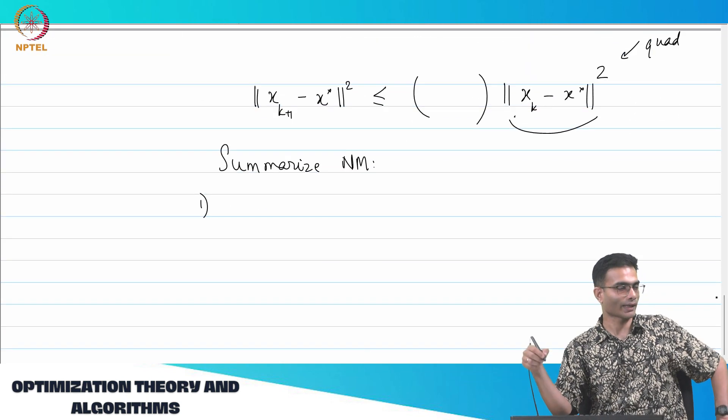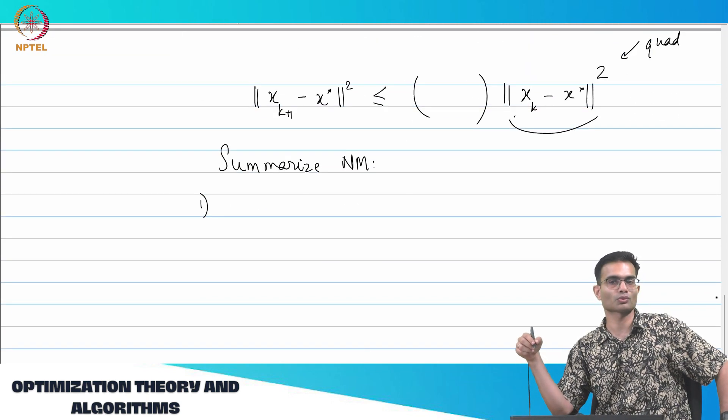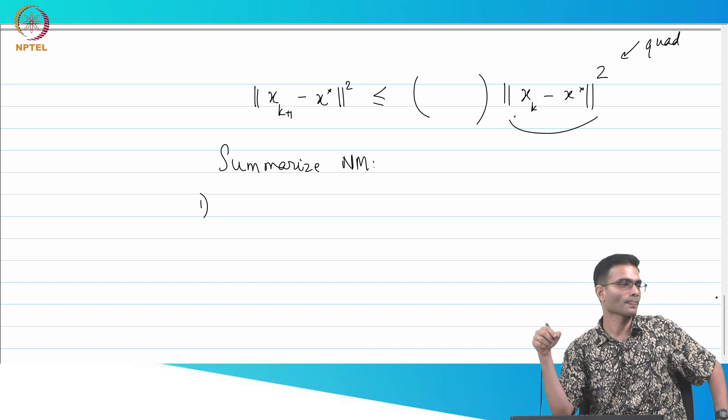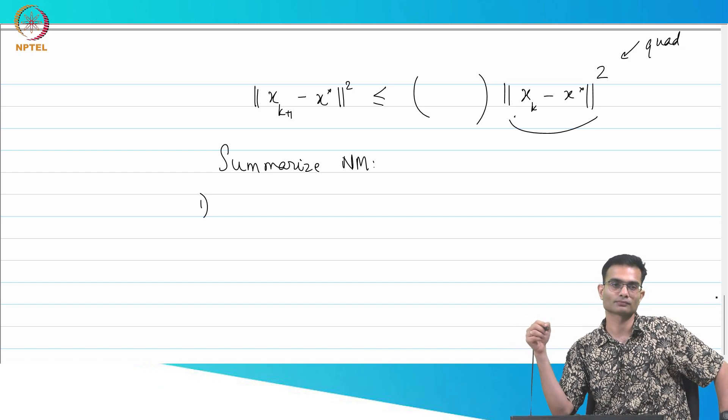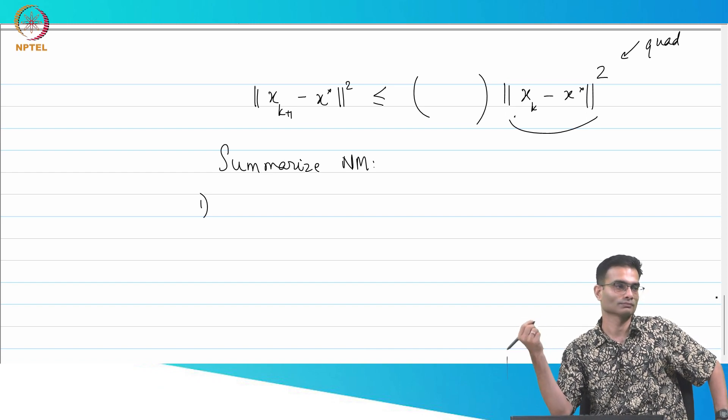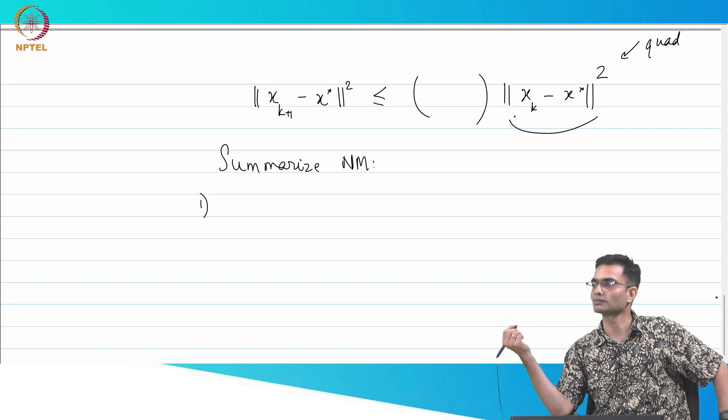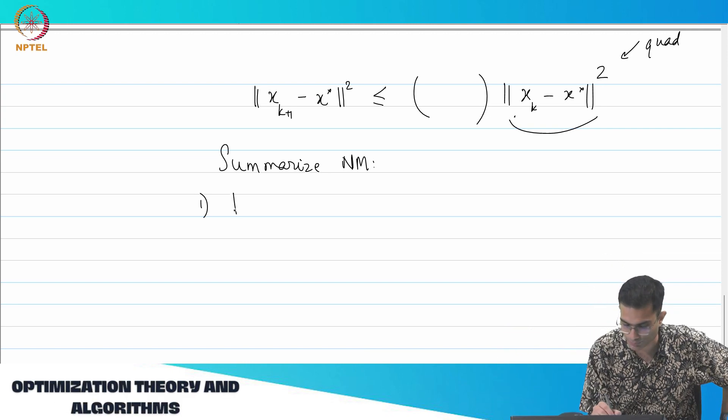Supposing you were writing an algorithm for Newton method, what would you do as step one? How do you start? Pick a starting point.